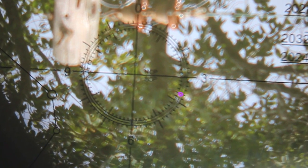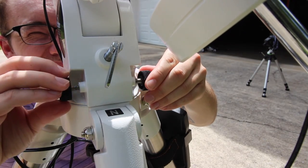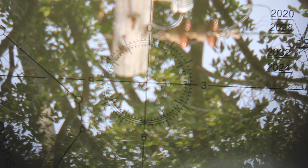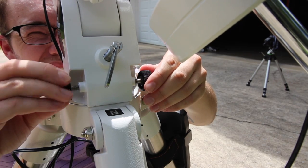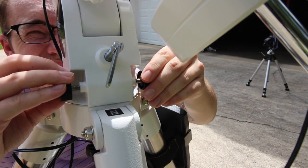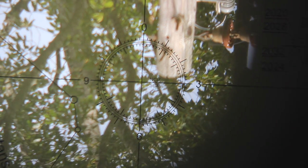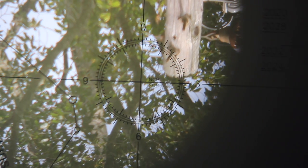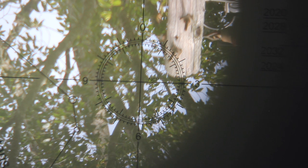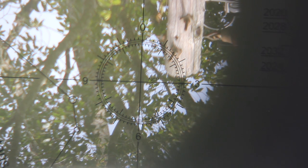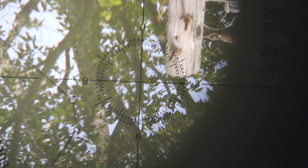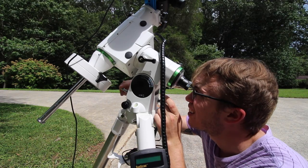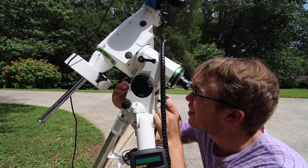Loosening up the bolts here on the bottom of the HEQ5, you can see that we're able to move the mount left and right. You want to get the bolt, or Polaris in this case, roughly over to the correct position. Now we also want to lower the mount to the correct position. As I've shown you in the last video, use these butterfly bolts on the mount to do just that.